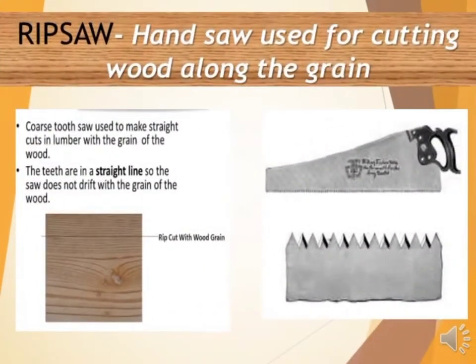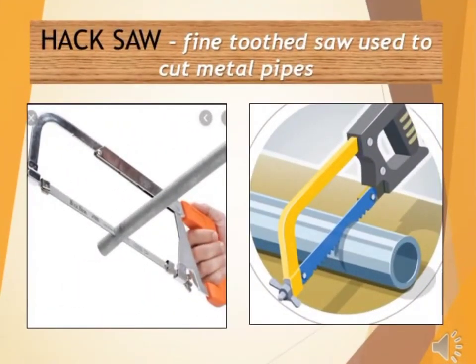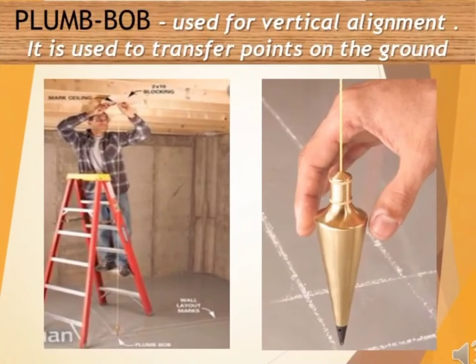Then, we have Rip Saw — a rip saw is a hand saw used for cutting wood along the grain. Then, we have Plumb Bob — a plumb bob is used for vertical alignment. It is used to transfer points on the ground.